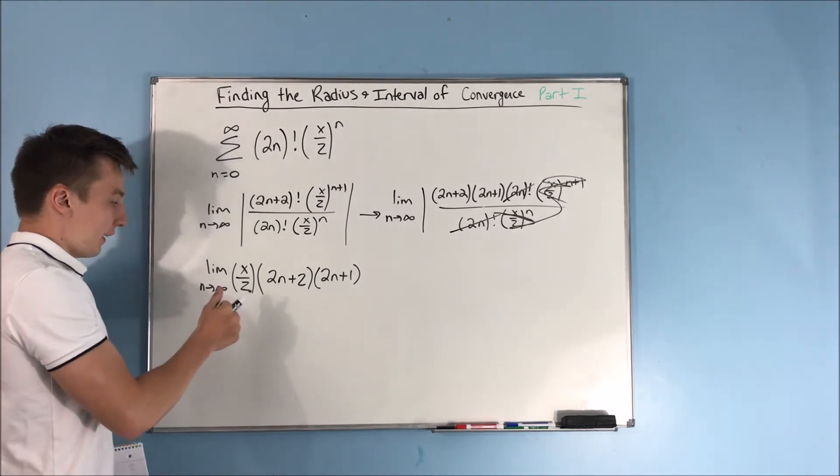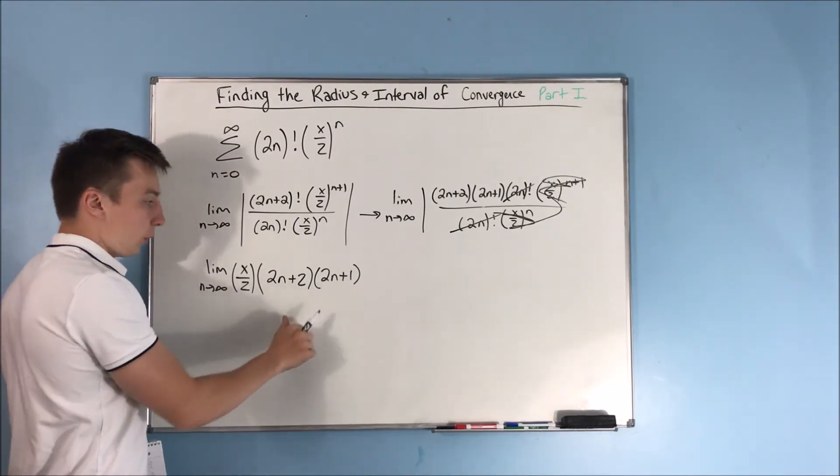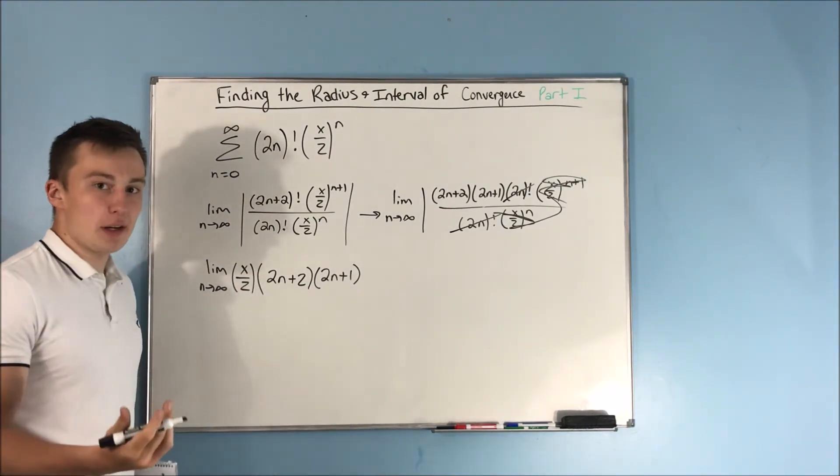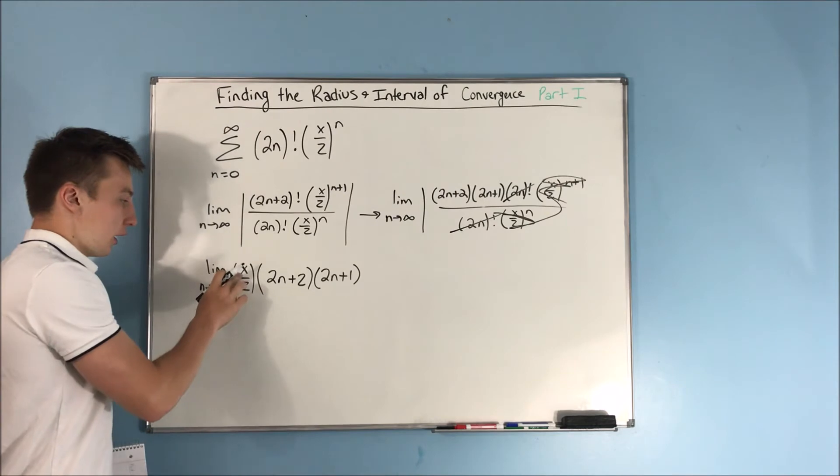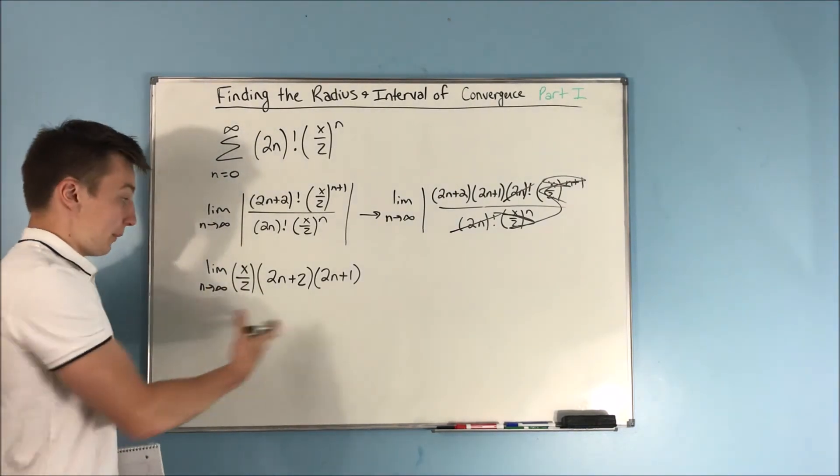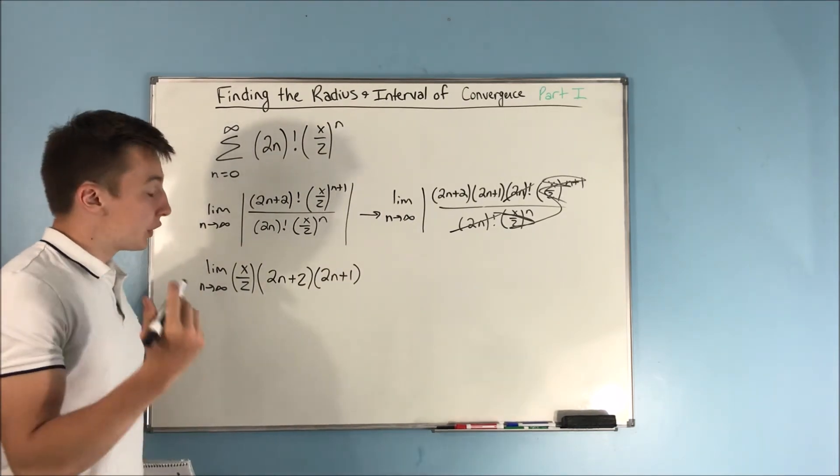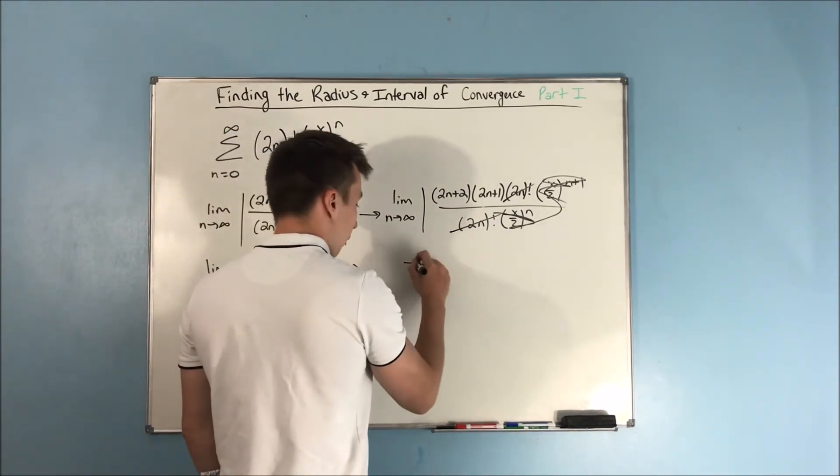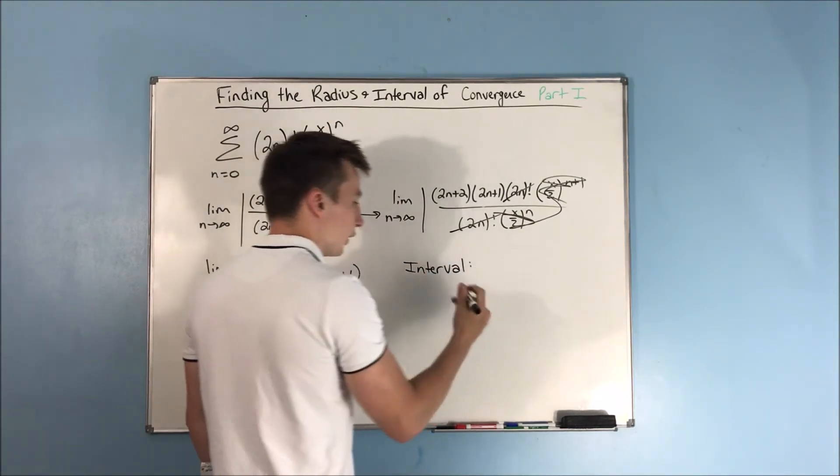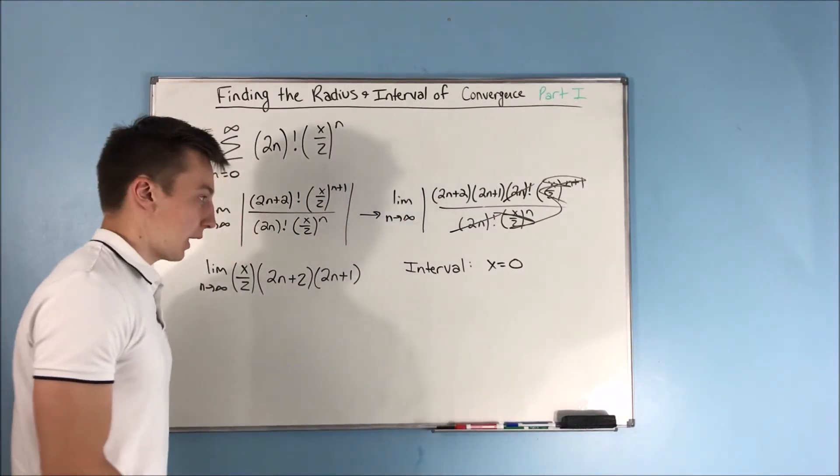So you can see here that as n approaches infinity, well, the only x that you can put in here to make this thing not be infinite is 0. You can put a 0 in for x, and then you have your limit equal to 0, which is less than 1.